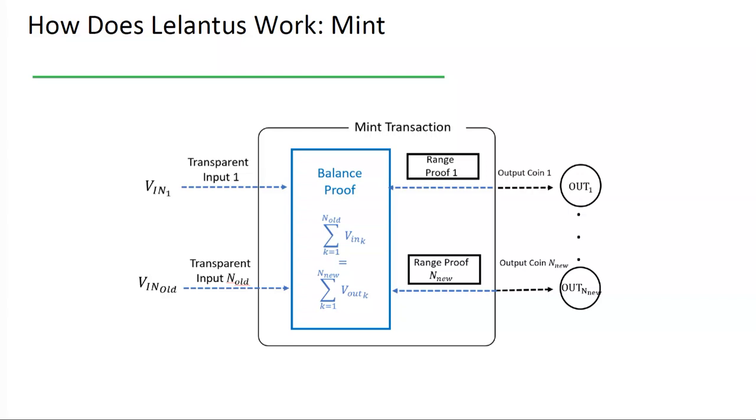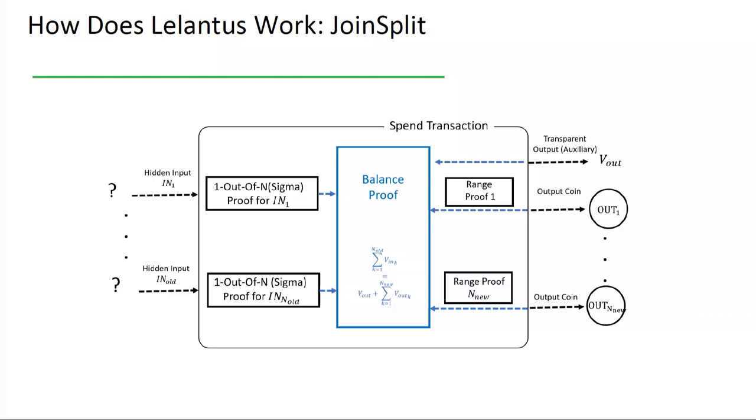So, let's see how it works. It provides two basic types of transactions. First one, mint transaction enables the users to mint base coin into shielded coins of arbitrary values, and provides a balance proof that the output coin values sum up with the minted base coin amount. And it allows to join split transaction, which means you can merge, split, and redeem coins without revealing the input coin origins, and also preserving the confidentiality of both input and output coin amounts. It uses new cryptographic constructions called one out of n proofs to hide the origin of inputs, but also to generate the balance proof.